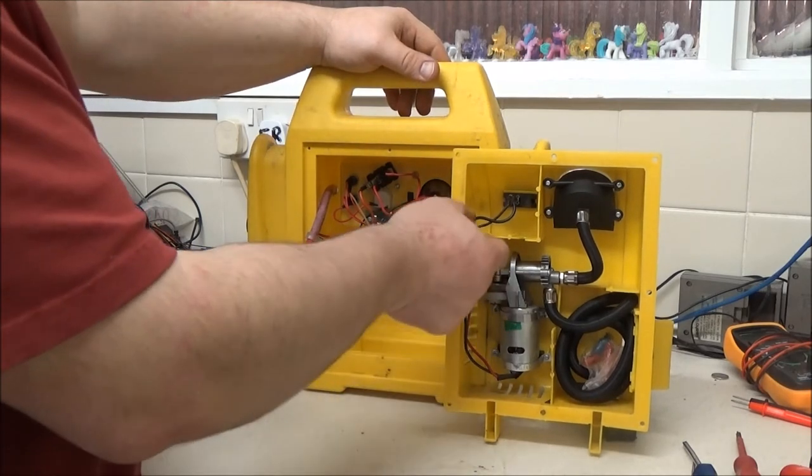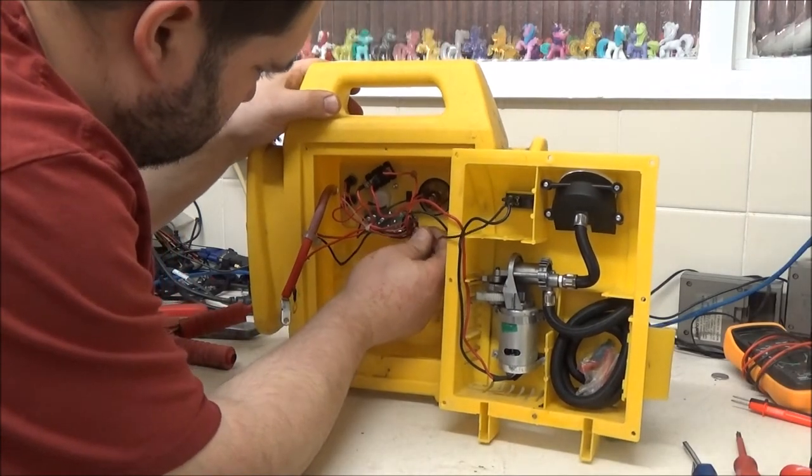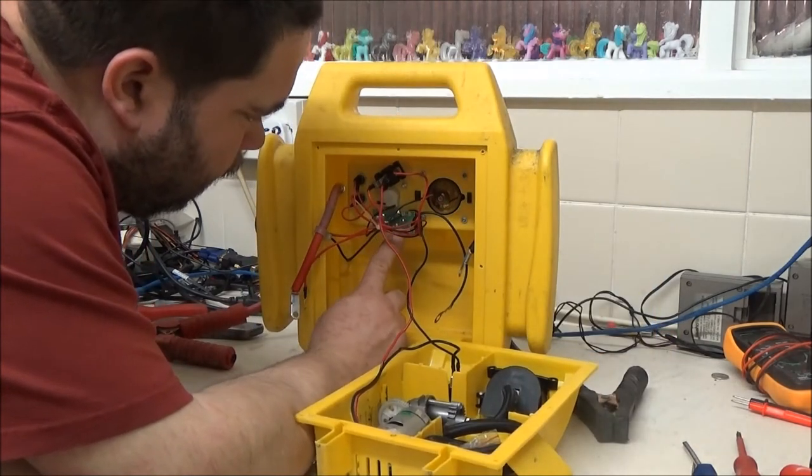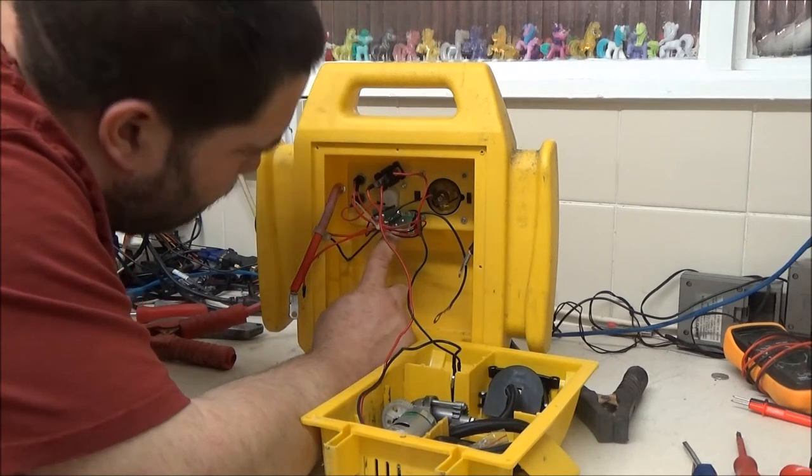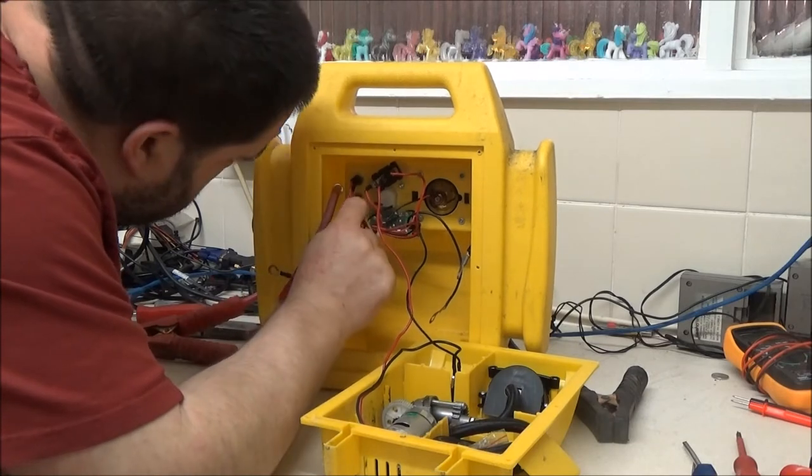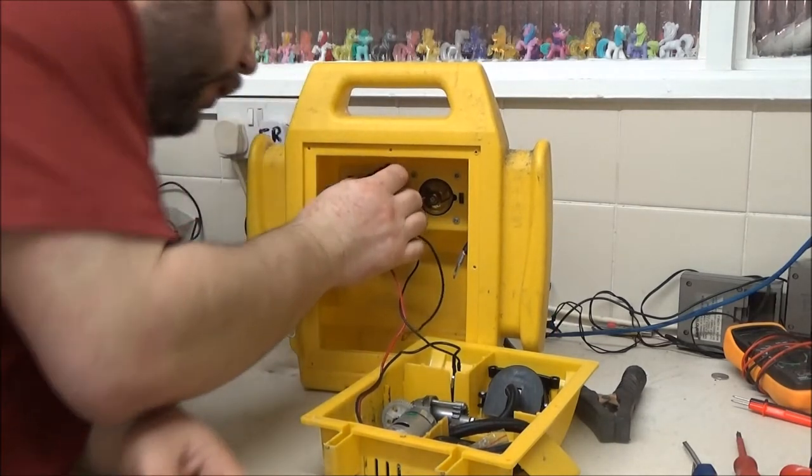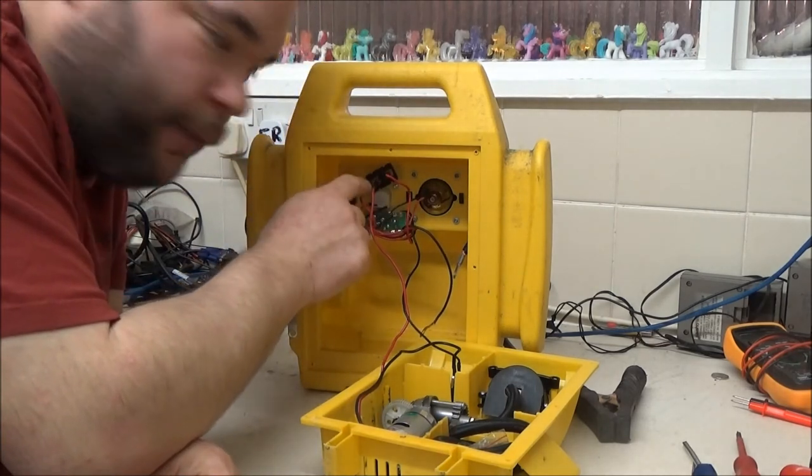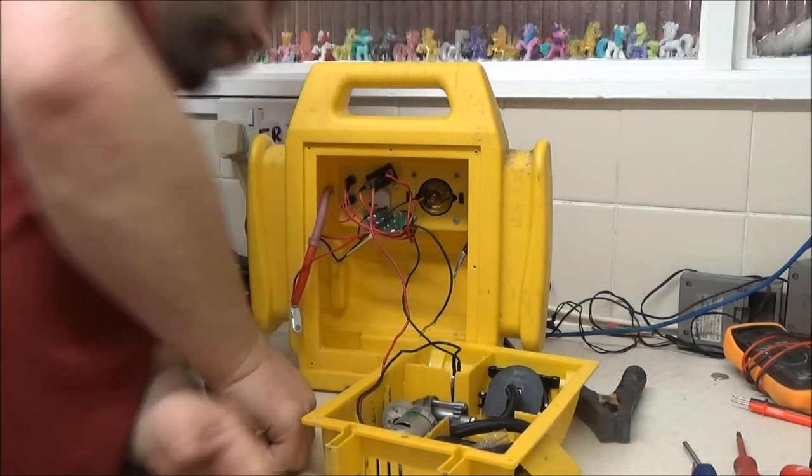That switch is actually connected to this main... there's a dinky little circuit board right here. What have we got? I know what these buttons are for. Right, so all of this is for the voltage meter on the front. I think it's voltage. Yeah, DC volts. So you know if your battery's charged or not.